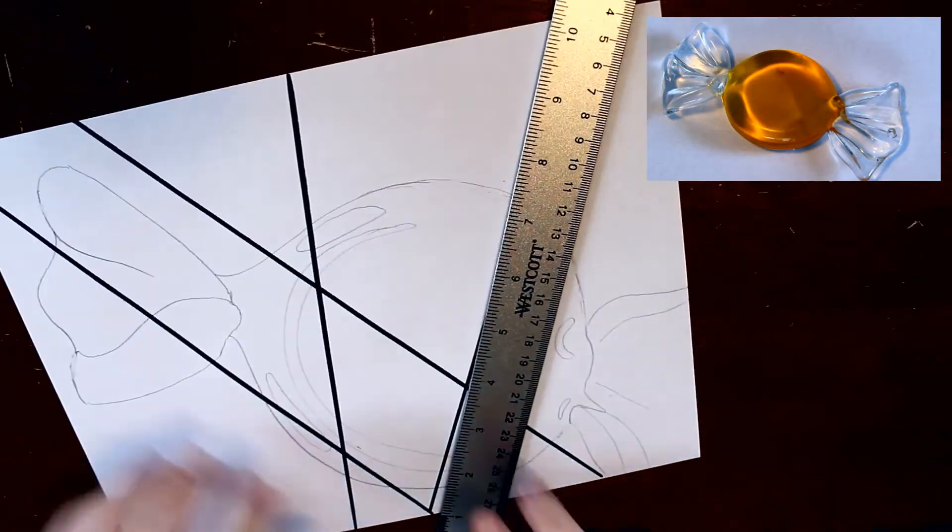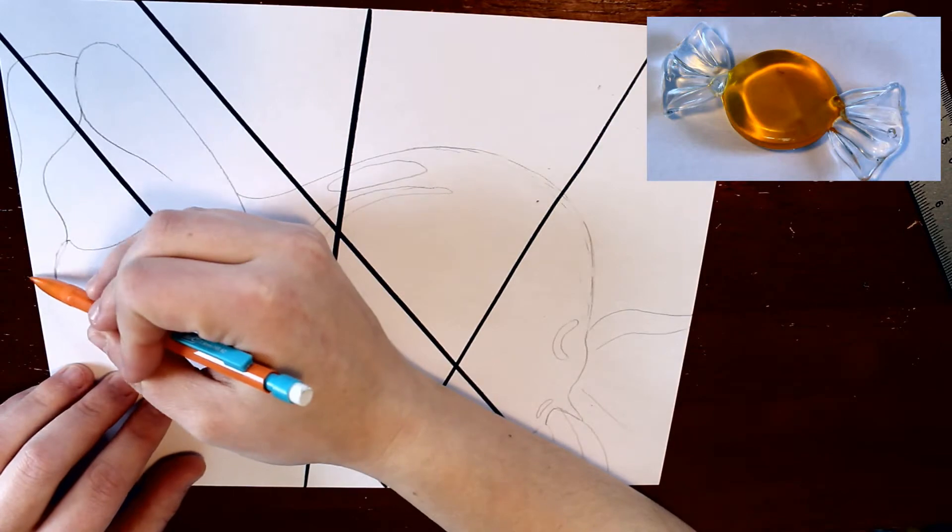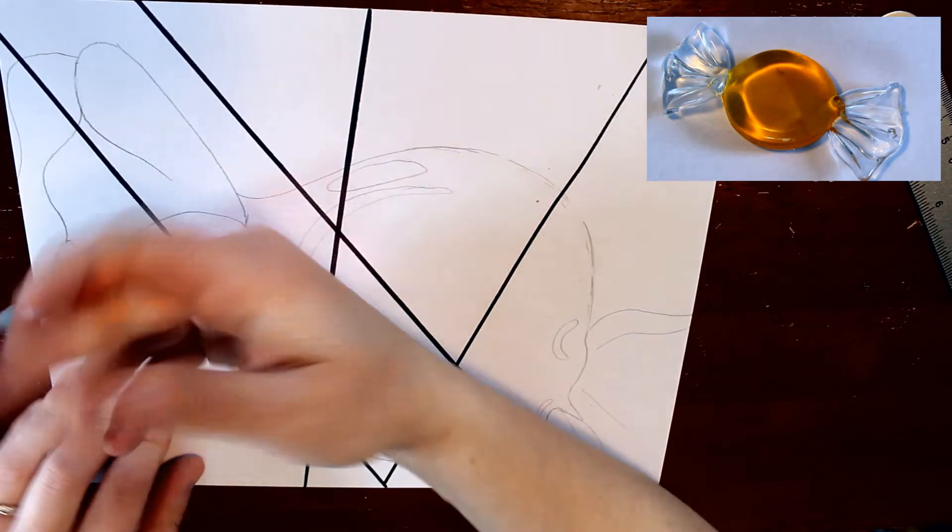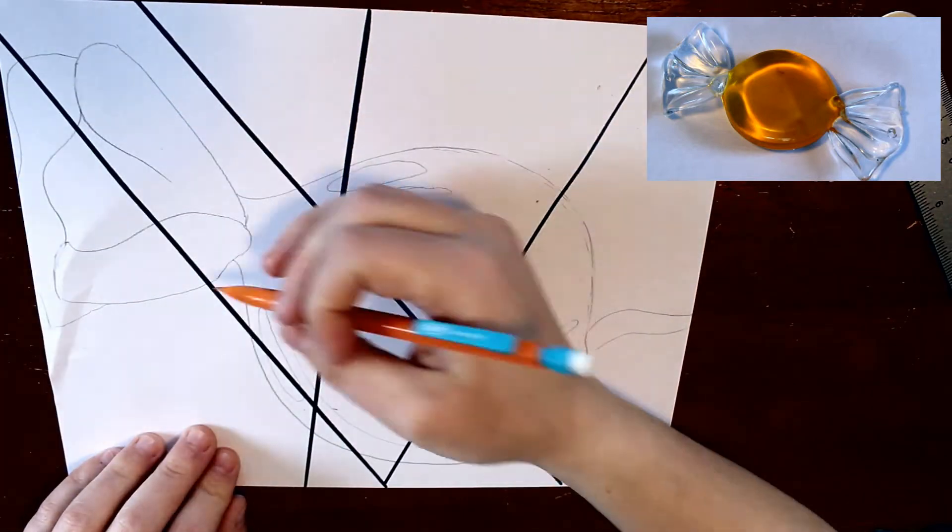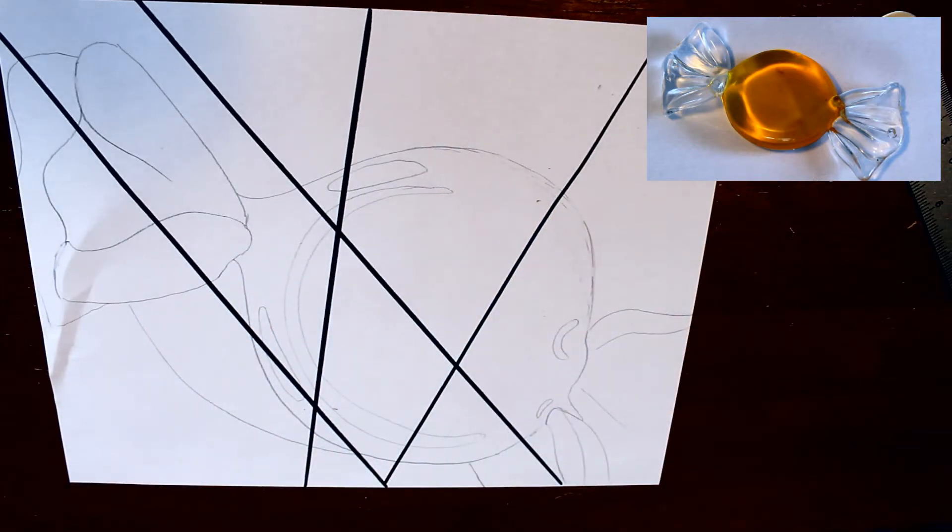Just make sure that the line is going from one edge of the paper to the other edge of the paper and that it's going through your still life object. You can make more than three lines if you'd like, but we should have at least three lines.